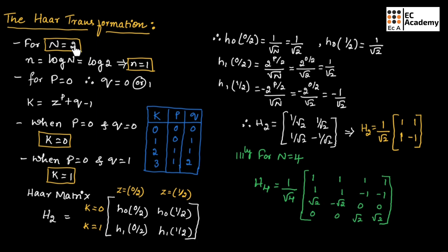If n equals 4, then we need to find four values of K. This table shows the different values of K for various combinations of P and Q: if P equals 0 and Q equals 0, K equals 0; if P equals 0 and Q equals 1, K equals 1; if P equals 1 and Q equals 1, K equals 2; if P equals 1 and Q equals 2, K equals 3. Likewise, we can find different values of K.